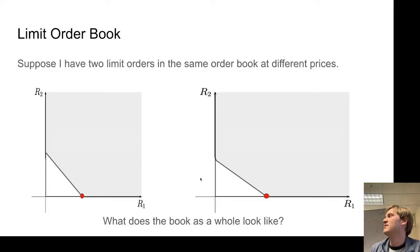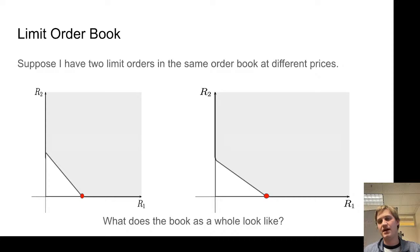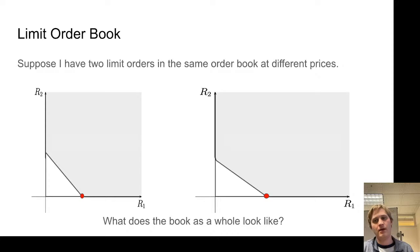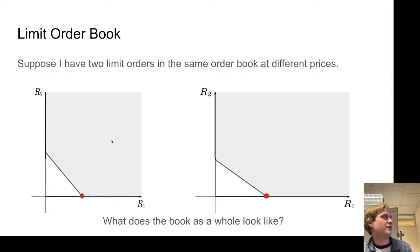Limit order books are more common in traditional finance than in DeFi, partly because the compute required to iterate through a list of orders and find the correct ones to fill is too much for a blockchain. Let's suppose I have a limit order book with two orders at different prices. The first has a steeper slope, representing a limit order willing to give up less R1 and wanting more R2 in exchange — a greedier limit order. The right-hand side is less ambitious, willing to give up more R1 in exchange for less R2.